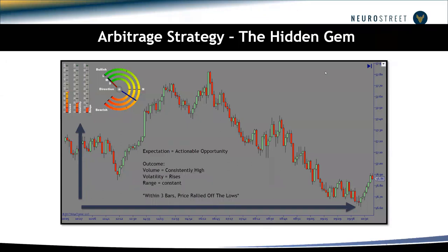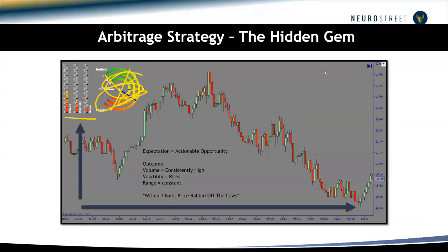Certain markets are notorious for this — kind of like crude oil, the Russell, NASDAQ, gold. The big thing is knowing when to expect it. Wouldn't you want to know, as the market's coming down, that within two bars we're about to get a massive explosion? That's important — especially if you're trying to look for a trade opportunity, not necessarily an entry strategy, but knowing what to forecast. The reason I call it the hidden gem is because when you use this tool and apply it to any timeframe on your entry charts — whether using range, Renko, pullback, whatever — you'll be able to see in advance how that would work.